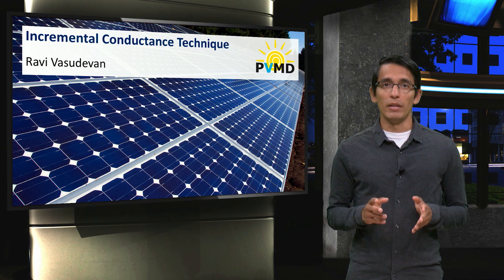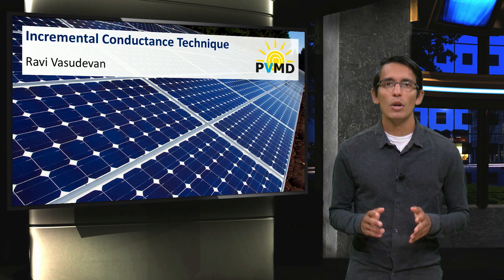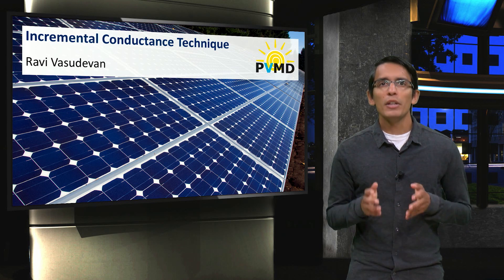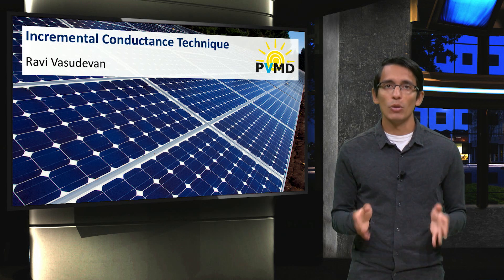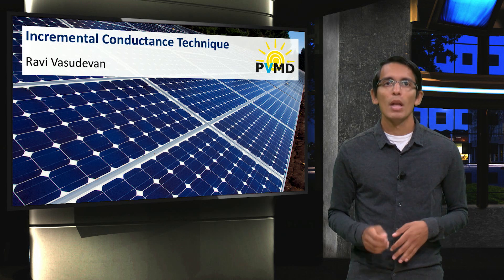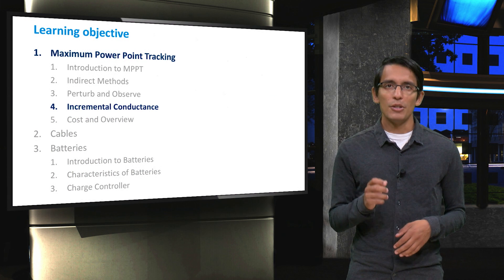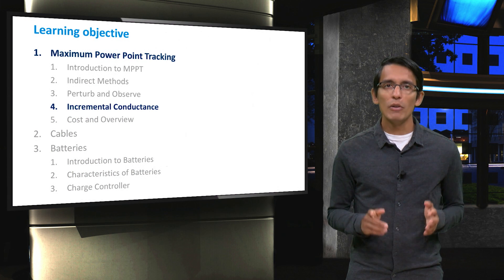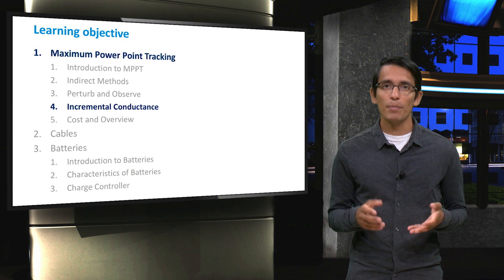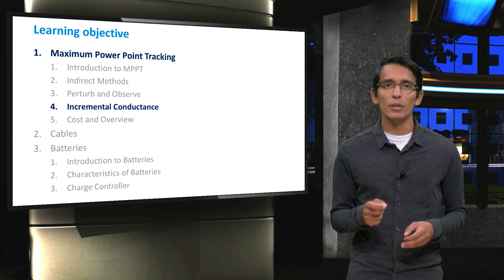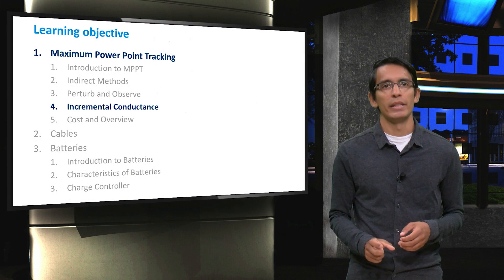The perturb and observe method, which was studied in the last video, was a fairly straightforward way to track the maximum power point of a solar panel. In this video, I'm going to talk to you about another MPPT technique that can be applied to the solar panel. It is called the incremental conductance technique.